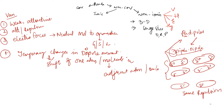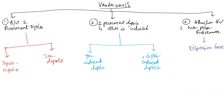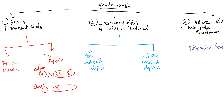The second type under permanent dipoles is ion-dipole interaction. There are two types of ions: cation, which is positively charged, and anion, which is negatively charged. When a cation is placed near a dipole that has a partially positive charge, it will not attract — it will get repelled. But when we place an anion towards the same dipole, it gets attracted because of the opposite charges.